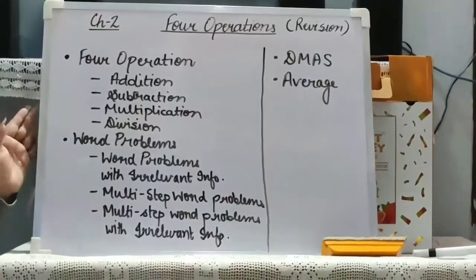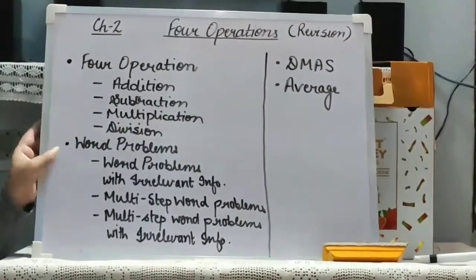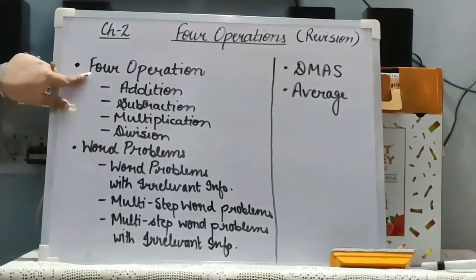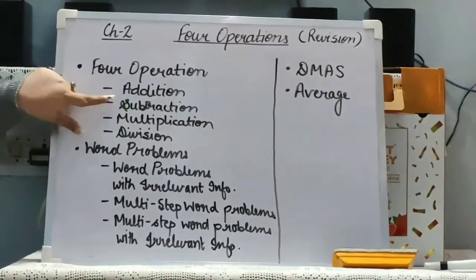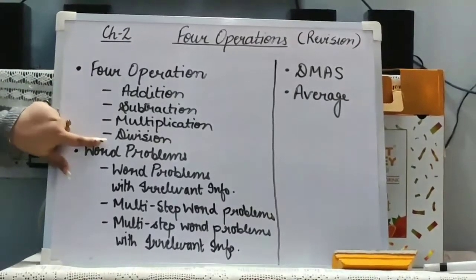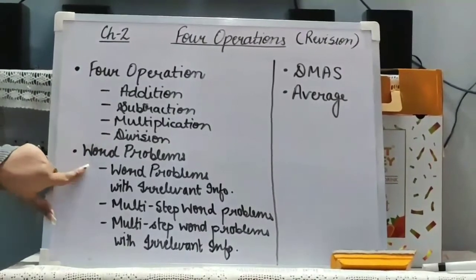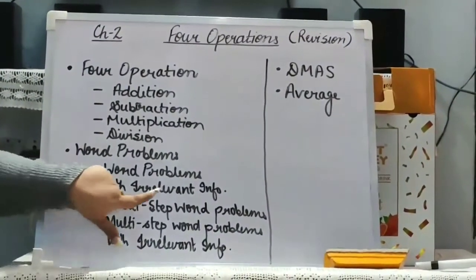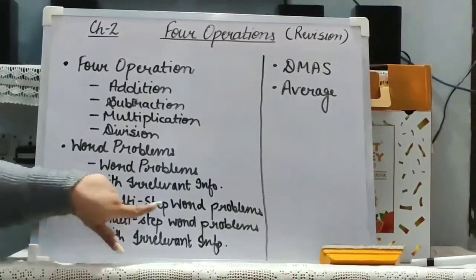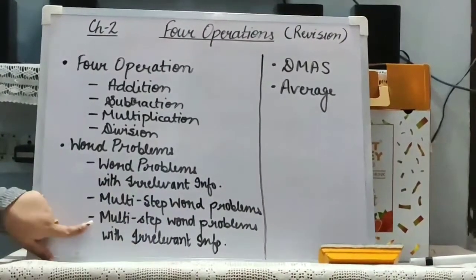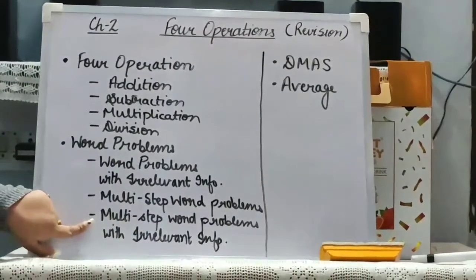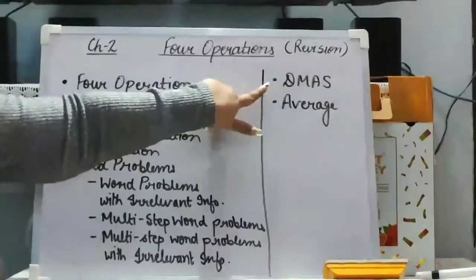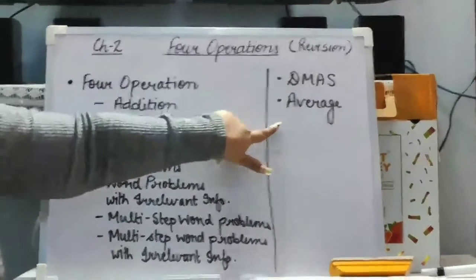The topics that we have studied in chapter 2, four operations are: four operations — addition, subtraction, multiplication and division — word problems, word problems with irrelevant information, multi-step word problems, multi-step word problems with irrelevant information. Then we have done DMAS and Average.